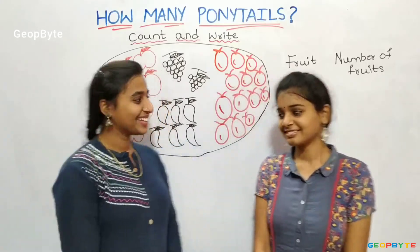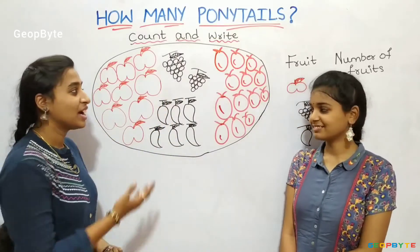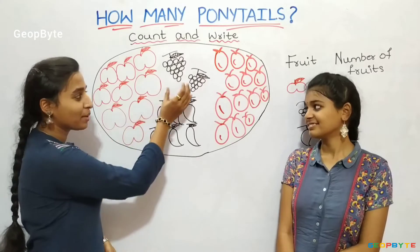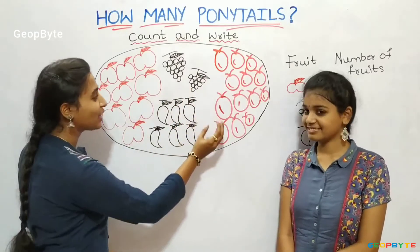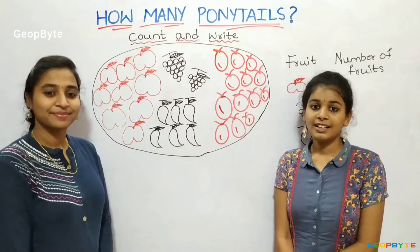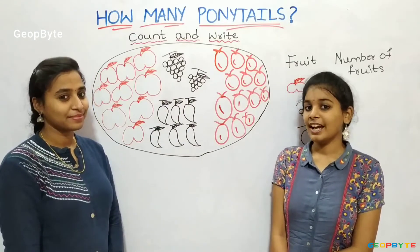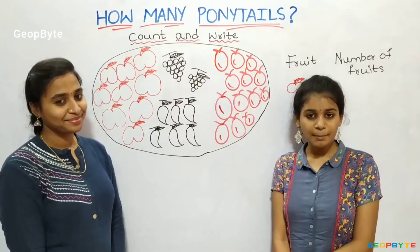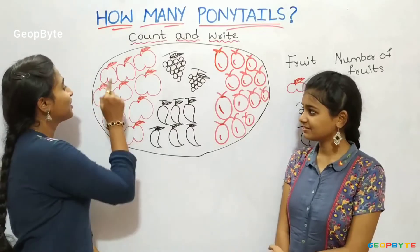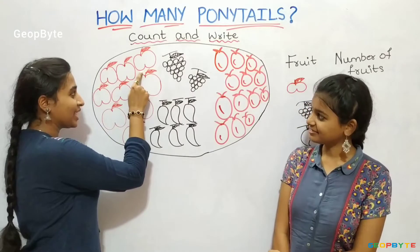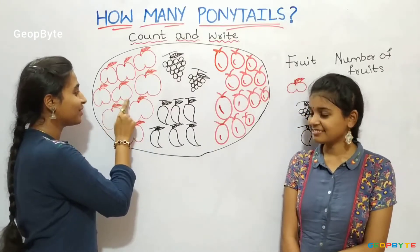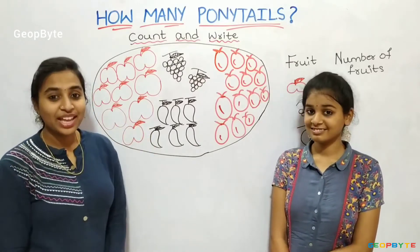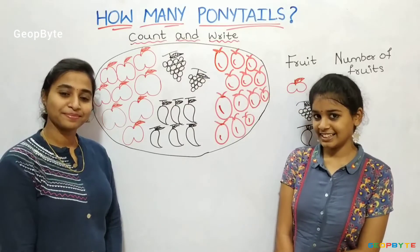Hey kids, see here — I have a basket of fruits. I have a few apples, grapes, mangoes and oranges. Now let us count each fruit and write the number of fruits. Let us count apples first: 1, 2, 3, 4, 5, 6, 7, 8, 9. We have 9 apples — let us write 9.